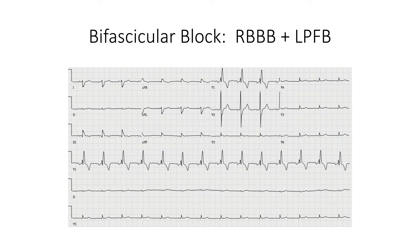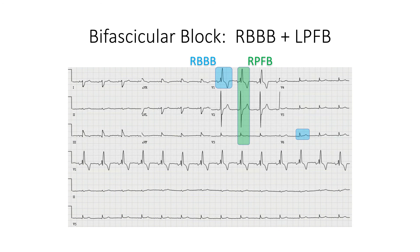Here's the trickier one. This is bifascicular block where you have both right bundle branch block and left posterior fascicular block. You can see the classic RSR prime bunny ears in lead V1 with a reciprocal downward T wave, and essentially a mirror image of this in lead V6. Also notice the extremely tall R waves seen in leads V1 through V3. Taken together, this is bifascicular block involving the left posterior fascicle.